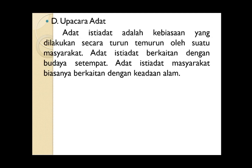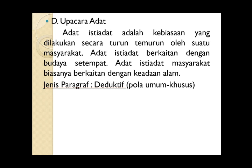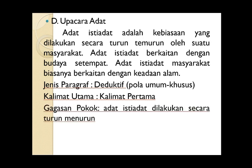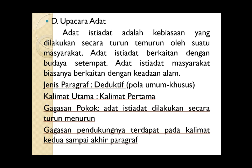Poin D, tentang upacara adat. Jenis paragrafnya adalah paragraf deduktif, mengandung pola umum-khusus, di mana kalimat pertama mengandung pola umum, kalimat kedua sampai terakhir mengandung pola khusus yang kalimatnya lebih spesifik atau lebih rinci penjelasannya. Kalimat utama terletak pada kalimat pertama. Gagasan pokoknya: adat istiadat dilakukan secara turun-menurun. Gagasan pendukungnya terdapat pada kalimat kedua sampai akhir paragraf.